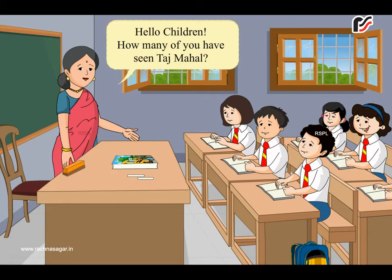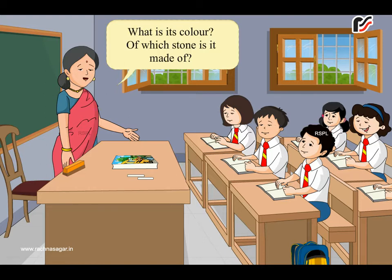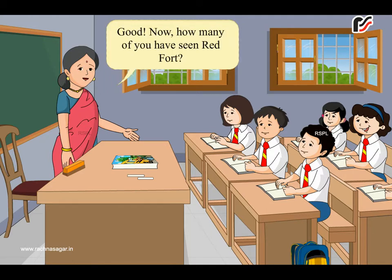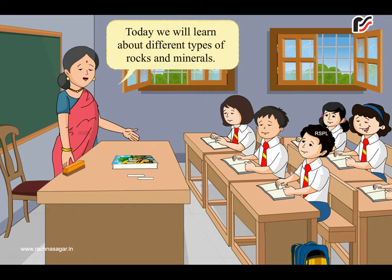Hello children! How many of you have seen the Taj Mahal? What is its color? What is it made of? It is white in color. It is made up of marble. Good! How many of you have seen Red Fort? Today we will learn about different types of rocks and minerals.